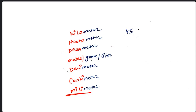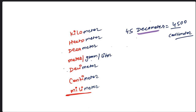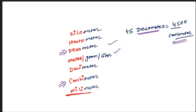If I ask you: 45 decameters equal to how many centimeters? We are at decameter and have to reach centimeter. Find the difference: 1, 2, 3 — there is a 3-step difference. When counting the difference, you must leave one endpoint — either the starting point or the ending point, but not both. So the answer is 45 followed by three zeros: 45000.